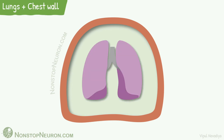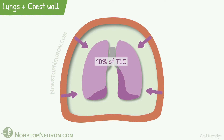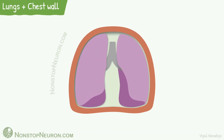Now let's bring lungs and chest wall together. In the body, lungs and chest wall move together as a single unit. Under resting conditions, lungs want to be at 10% of total lung capacity, so they pull the chest wall inward. And the chest wall wants to be at 60%, so it pulls the lungs outward. The equilibrium is achieved at about 40% of total lung capacity.